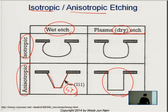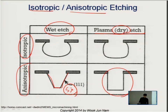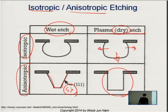When you use a very small bias on dry etching, you can also achieve isotropic etching. Depending on the gases you are using, you can also achieve isotropic etching out of dry etching as well.